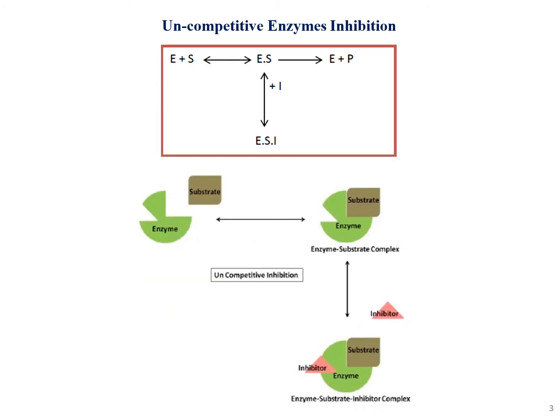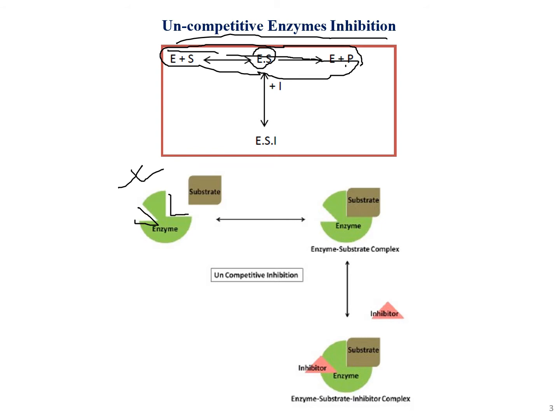Moving on, the next type is uncompetitive enzyme inhibition. As the name suggests, the inhibitor does not compete directly. The basic equation still shows enzyme plus substrate forming an enzyme-substrate complex, which later forms product. However, in uncompetitive inhibition, the enzyme has two sites — two sides for attachment.